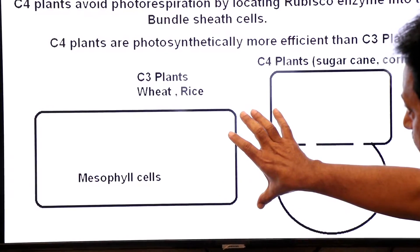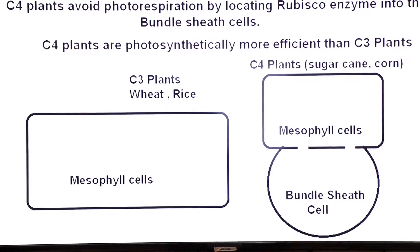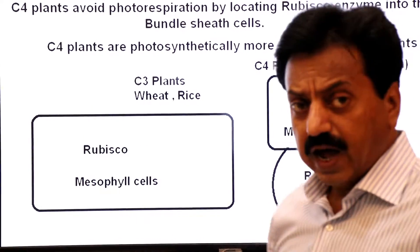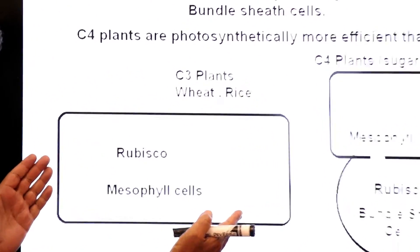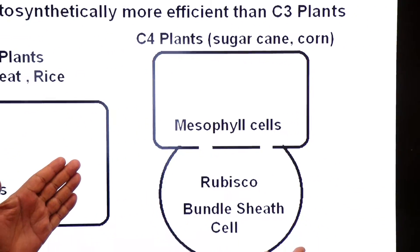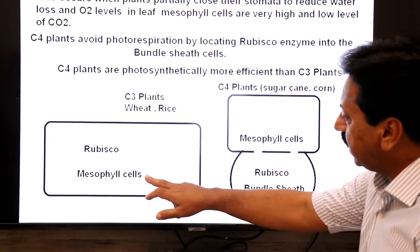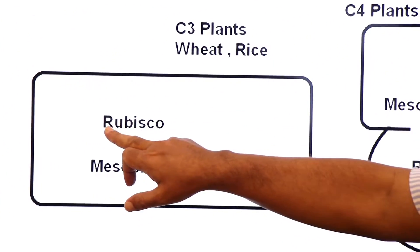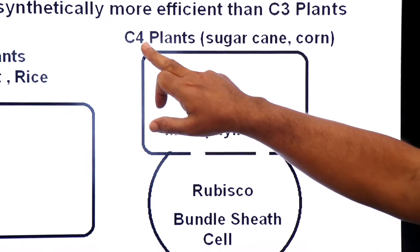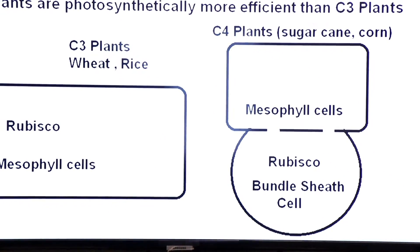This is the leaf anatomy of C3 plants and this is the leaf anatomy of C4 plants. Look at the Rubisco. Compare the anatomy. This is the leaf anatomy of C3 plants — wheat and rice — and this is the leaf anatomy of C4 plants like sugarcane and corn. Now look at the mesophyll cells of C3 plants: here the Rubisco is located. In the mesophyll cells of C4 plants, there is no Rubisco — Rubisco is only found in the bundle sheath.